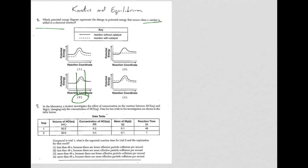Question 9, we have a lab. Student investigates the concentration, the reaction between hydrochloric acid and magnesium. Changing only the concentration of hydrochloric acid. Data for two trials and investigation are shown. So it says, compared to trial one, what is the expected reaction time for trial two and the explanation for that result?